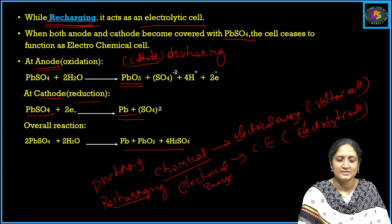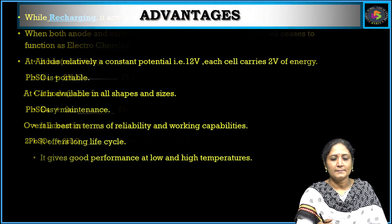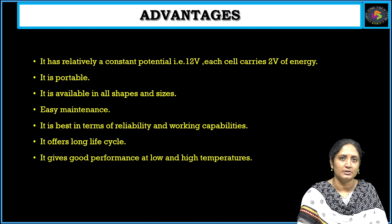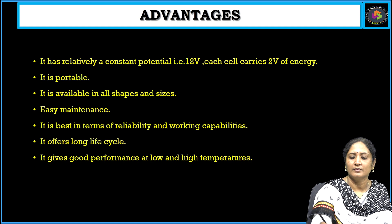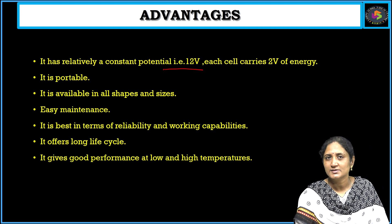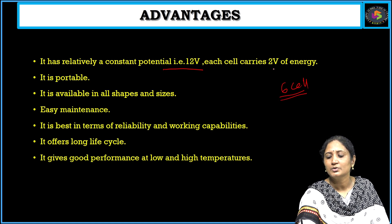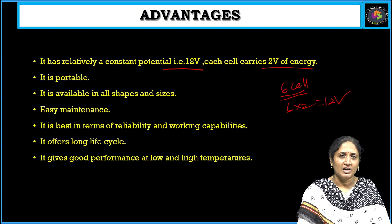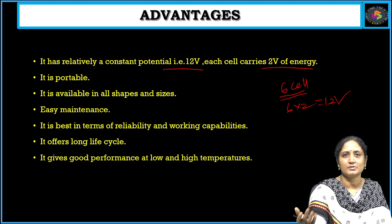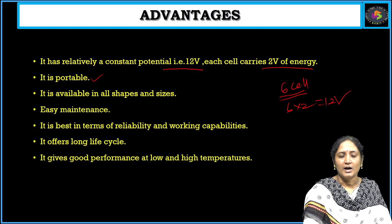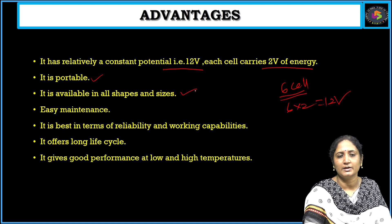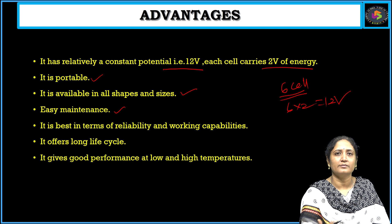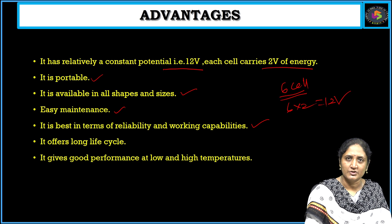This is the mechanism of lead acid batteries. Coming to the advantages: this battery produces 12 volts of energy — it consists of 6 cells, each producing 2 volts, so 6 × 2 = 12 volts. It is very portable and is used in mobiles and electrical devices. It is available in all different shapes and sizes. Maintenance is very easy and it is reliable, with highly good working capacity and high efficiency.